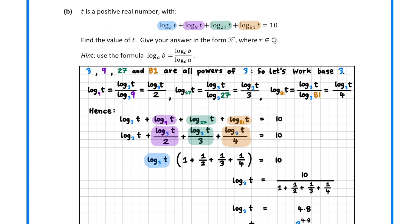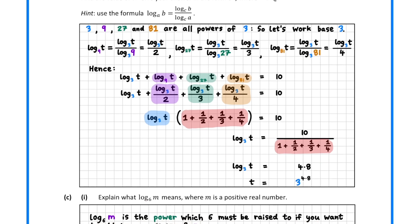Now, every term in our sum has a common factor, log base 3 of t. This can be factored out. Next, we can divide both sides by 1 plus a half plus a third plus a quarter. Calculating the right hand side tells us that log base 3 of t is equal to 4.8.